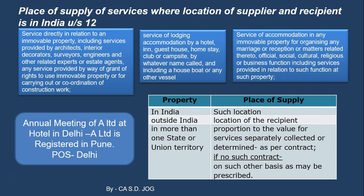Example three: An annual meeting of A Limited is held in a hotel in Delhi. A Limited is registered in Pune. This is the third case — services of accommodation in immovable property for a business function. The property, i.e., the hotel, is situated in Delhi, which is in India. So such location — Delhi — will be the place of supply of services.